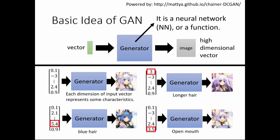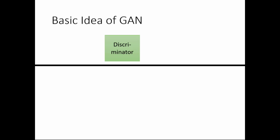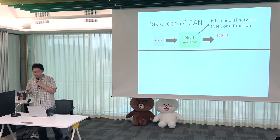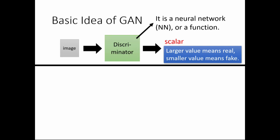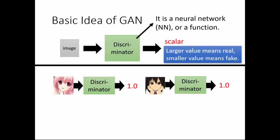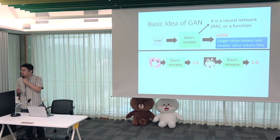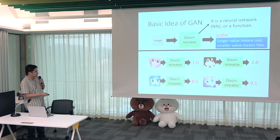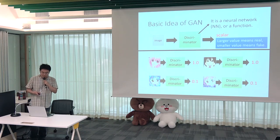In Generative Adversarial Networks, besides learning a generator, the most interesting part is that you also have to learn a discriminator, which can improve the generator. The discriminator is also a neural network — a function that takes an image as input and outputs a scalar representing how good the input image is. If the input image is high quality and looks like an anime face, the output will be larger. If the image is poor quality, the output will be small — for example, 0.0 for fake images and 1.0 for realistic ones.